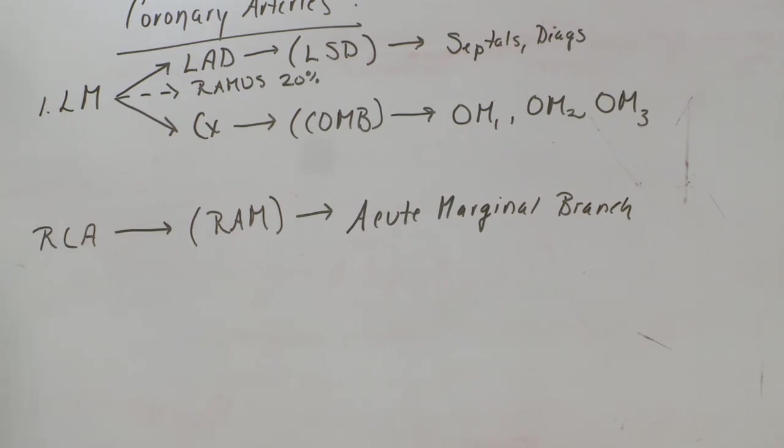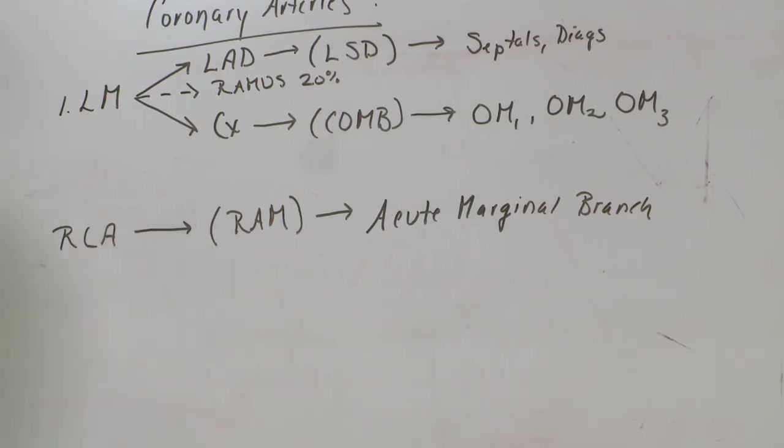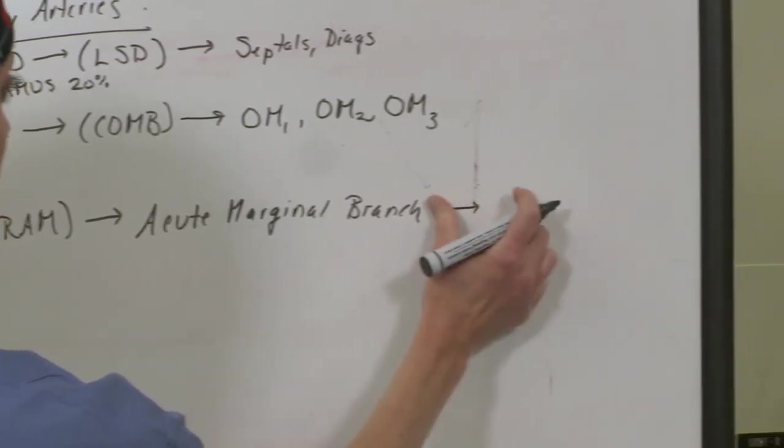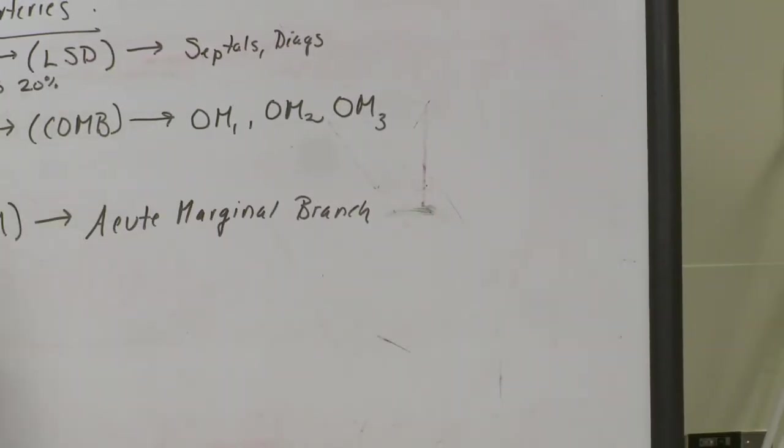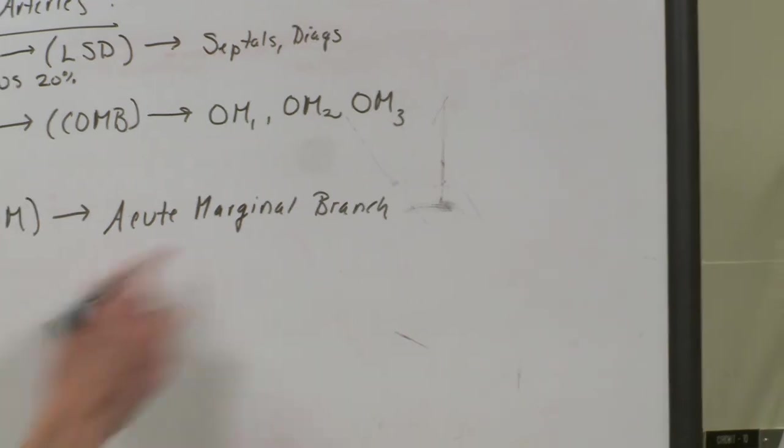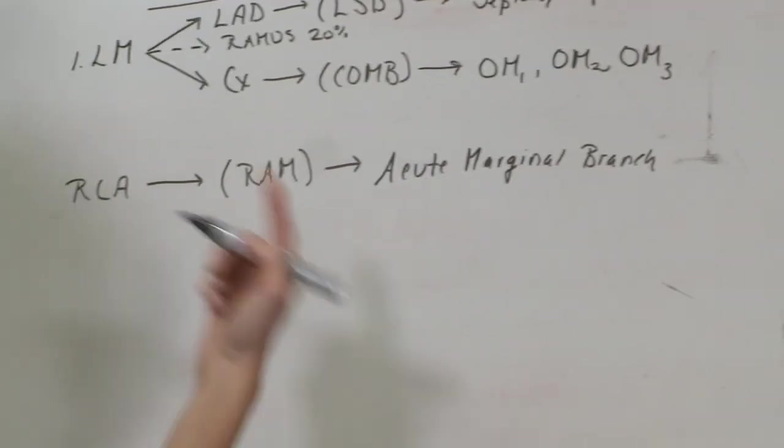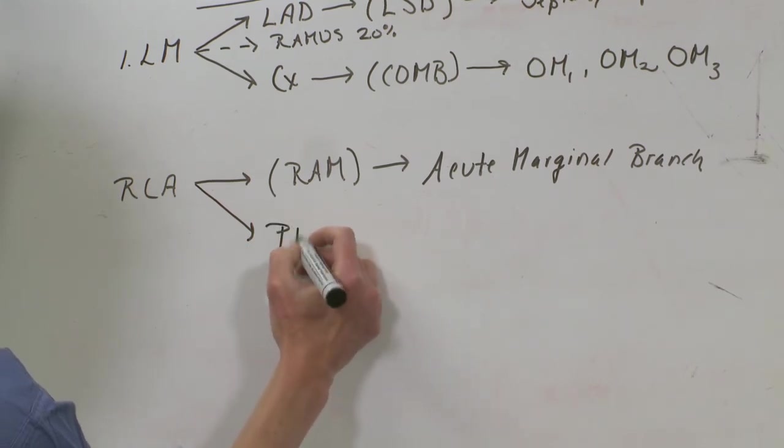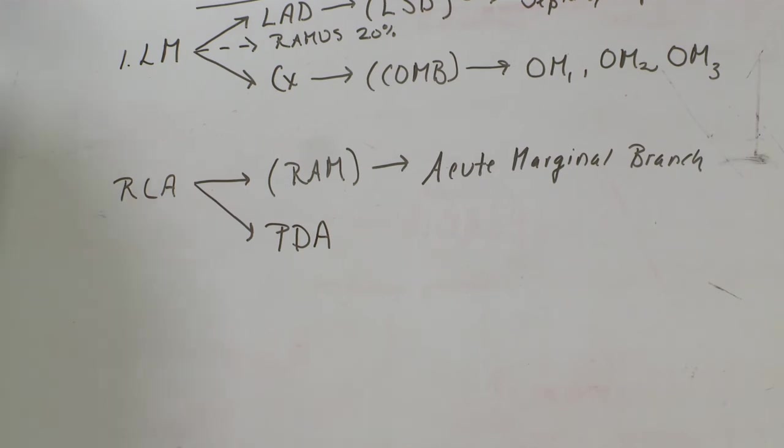And off of your RCA in most people also comes—actually I'll go this way. So you have the acute marginal branches off your RCA. And on the inferior side of the heart, usually comes your PDA, your posterior descending artery.